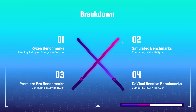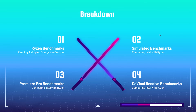Next we're going to look at a breakdown of the performance benchmarks: Ryzen benchmarks comparing oranges to oranges, then simulated benchmarks comparing Intel with Ryzen, then Premiere Pro benchmarks comparing Intel to Ryzen, and then DaVinci Resolve benchmarks comparing Intel to Ryzen — to help you get a full picture of which CPU you should choose for your next video editing laptop.